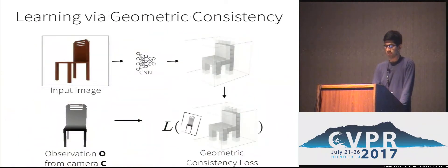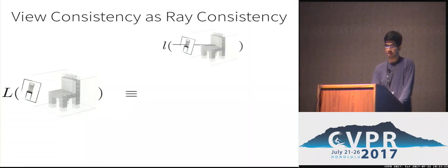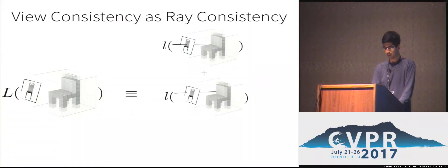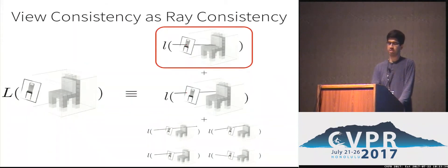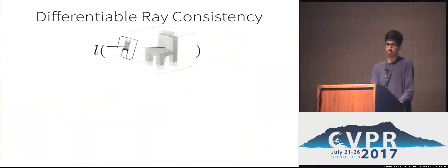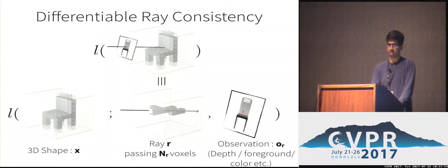Coming back to our approach, we have to define this geometric consistency loss between a 3D shape and some observation from a known viewpoint. The first insight is that instead of defining the loss between the image and the shape, we can define the loss one ray at a time. Our geometric consistency loss is then the sum of ray consistency losses, with one ray corresponding to each pixel. There are 3 components to this ray consistency loss: the volumetric shape X, which we want to be consistent with a ray R that has an associated observation O_R. This observation O_R is the value of the pixel in the corresponding observation image, and can be of varying forms like depth, foreground label, or color value.